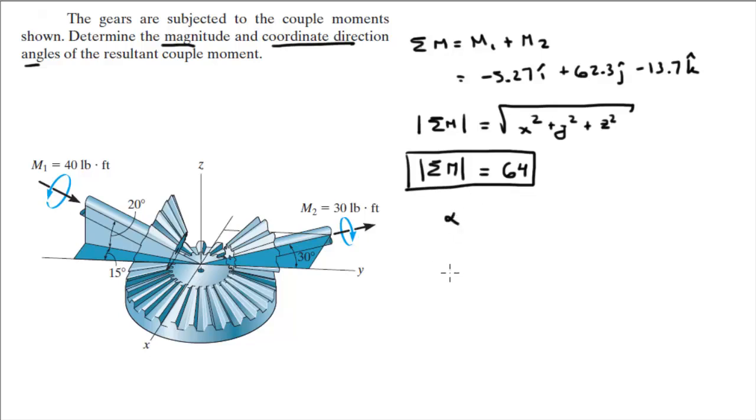And I need to find the coordinate direction angles, which are simply given by the cosine inverse of the X over the magnitude, the Y over the magnitude, and the Z over the magnitude. And once you plug these numbers into your calculator, remember when you plug in the X and the Z, you've got to still do it with a negative sign, otherwise you're going to get the wrong angle. You're going to get these angles: 94.7 degrees, 13.2 degrees, and 102.4 degrees.